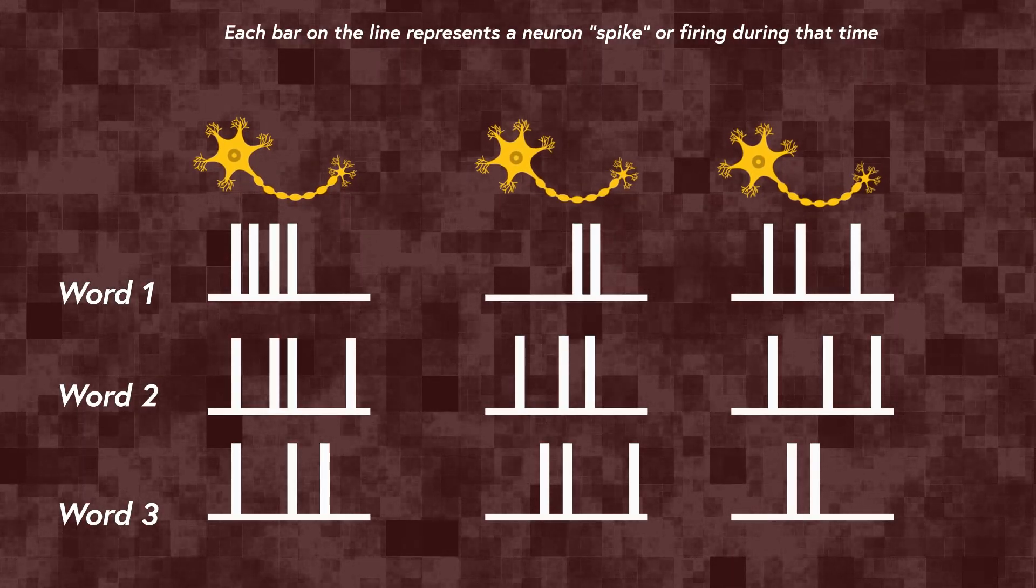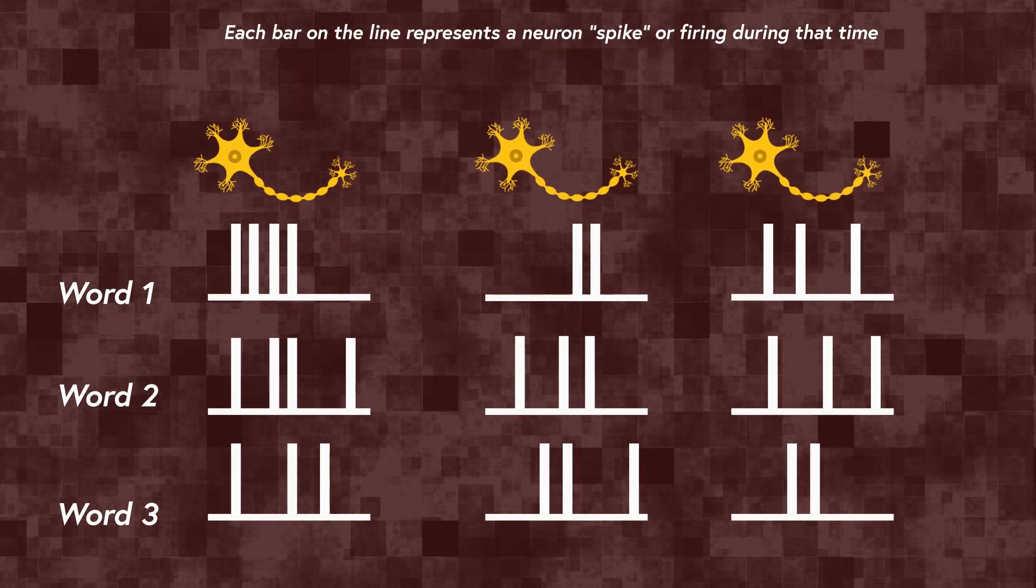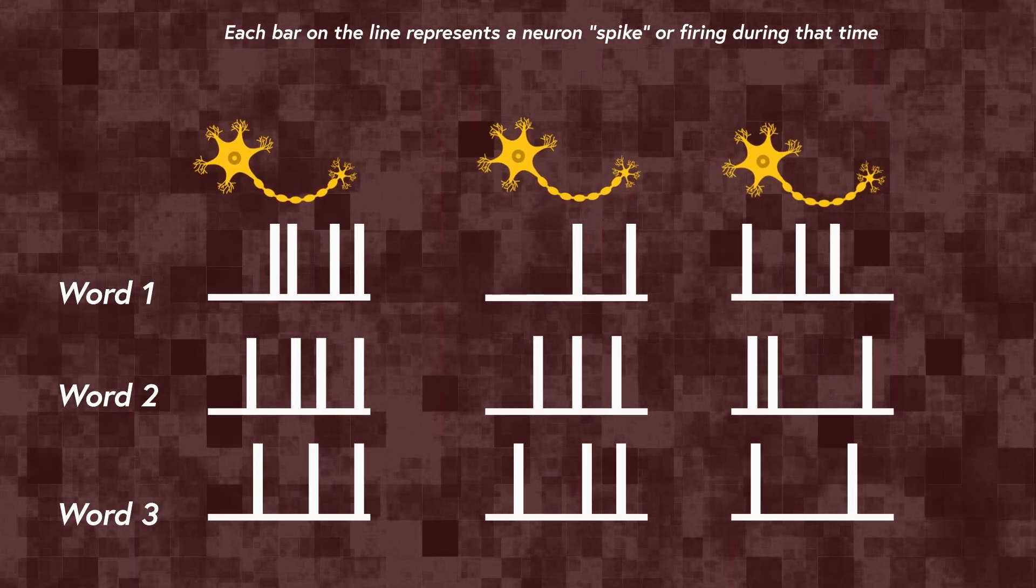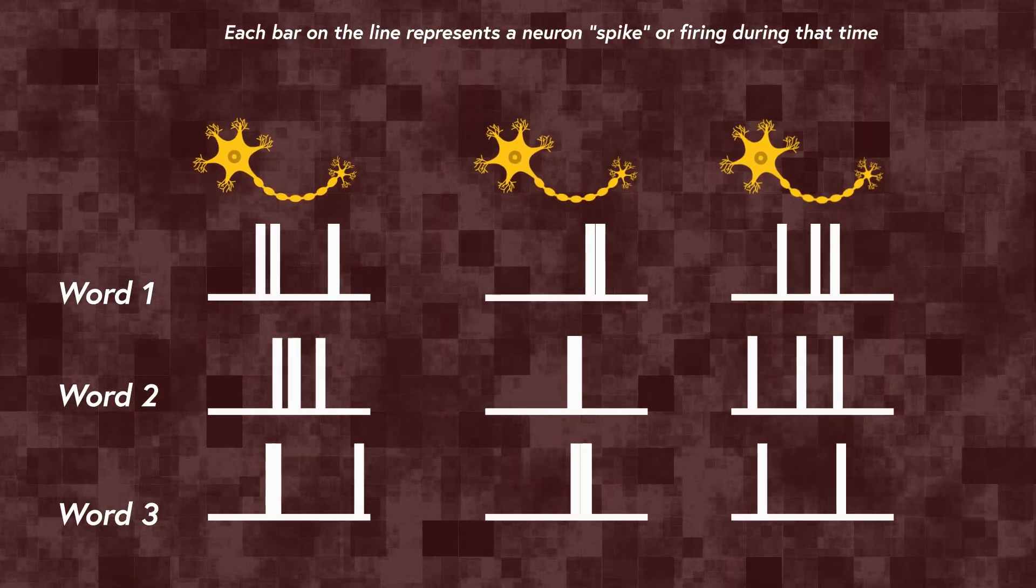To confirm a neuron was truly tracking time, they used a shuffle test where they randomly shifted the neuron's activity in time a thousand times.